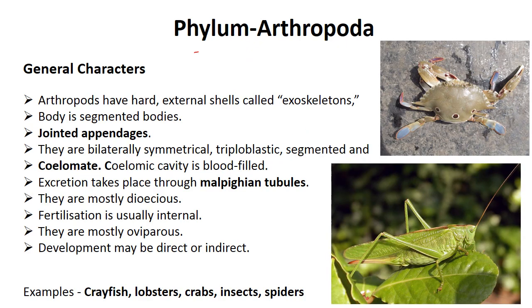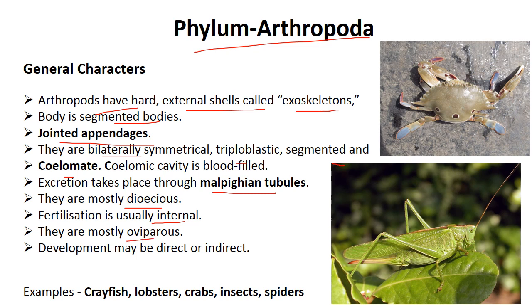Next phylum is Arthropoda, the largest phylum — about 80% of all living animals belong to phylum Arthropoda, and among those, about 79% belong to insects. Arthropoda means jointed appendages. They have a hard external covering called exoskeleton and the body is totally segmented. They are bilaterally symmetrical, triploblastic, and segmented, with a true coelom. Excretion takes place by Malpighian tubules. Fertilization is internal but oviparous; development may be direct or indirect with larval stages. Examples: lobster, crab, insects, spider, prawn.